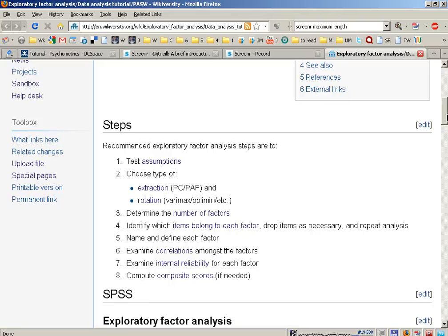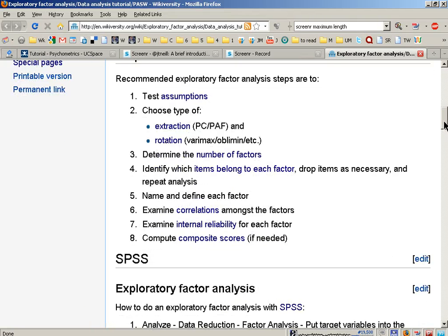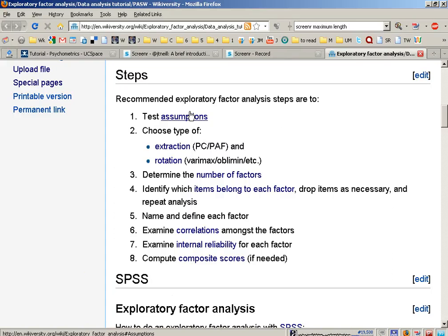To begin with, let's remind ourselves of the steps involved in exploratory factor analysis. First of all, we need to test assumptions. They relate to sample size and factorability of the correlation matrix.